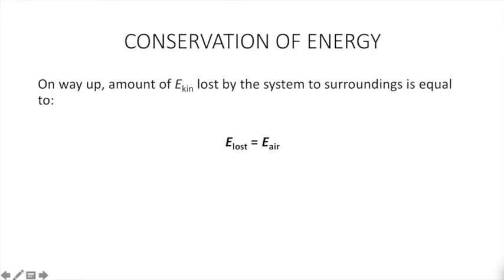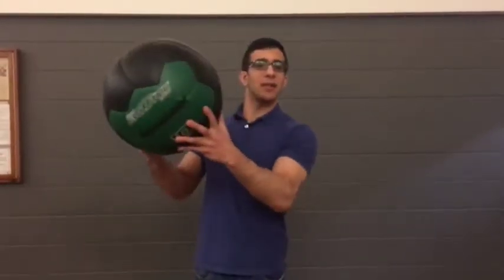When the basketball is on the way up, the amount of kinetic energy lost by the system to the surroundings is equal to the amount of energy lost due to air resistance. So now that we've seen how a basketball reacts when it impacts with the ground, how does this compare with a medicine ball?